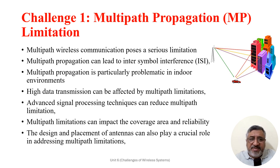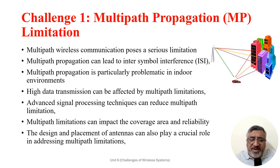The limitation imposed by multipath propagation calls for the use of advanced signal processing techniques, such as adaptive equalization and diversity combining, to mitigate the effects of multipath interference. Multipath limitation can impact the coverage area and reliability of wireless networks, and signal quality may vary significantly in different locations due to varying multipath conditions. The design and placement of antennas can also play a crucial role, as directional antennas or diversity schemes can help mitigate the effects of multipath interference.